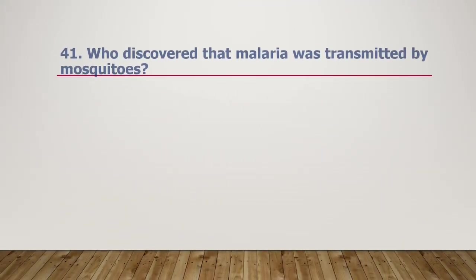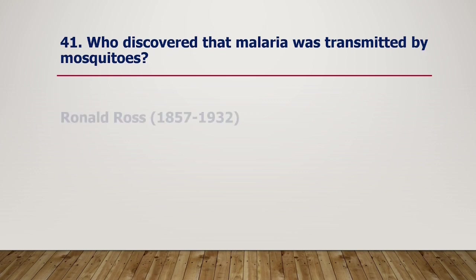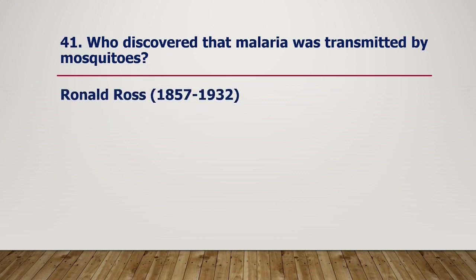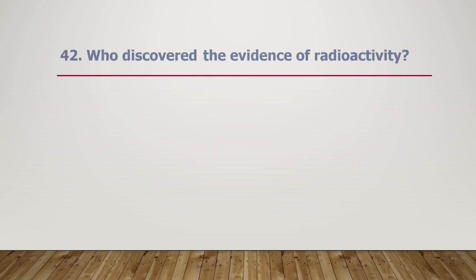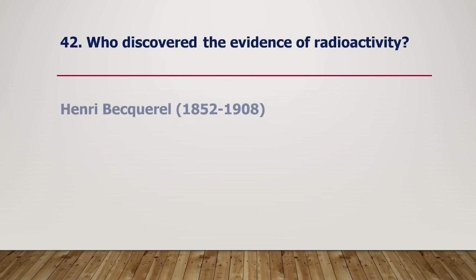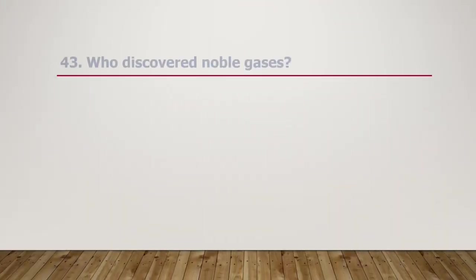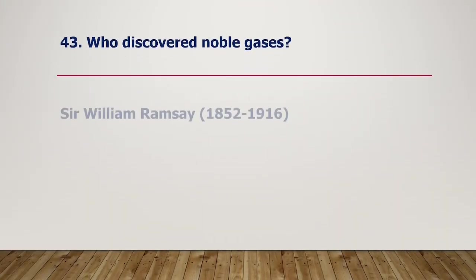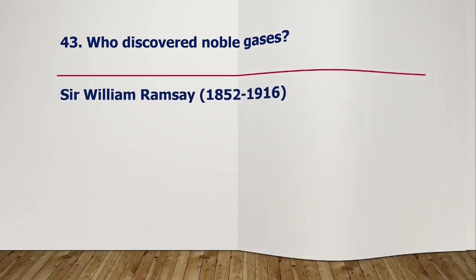Who discovered that malaria was transmitted by mosquitoes? Ronald Ross, 1857–1932. Who discovered the evidence of radioactivity? Henri Becquerel, 1852–1908. Who discovered noble gases? Sir William Ramsay, 1852–1916.